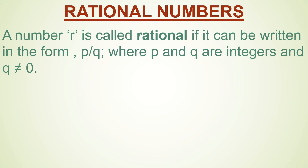Any number R is called rational if it can be written in the form of P by Q, where P and Q are integers and Q is not equal to 0.